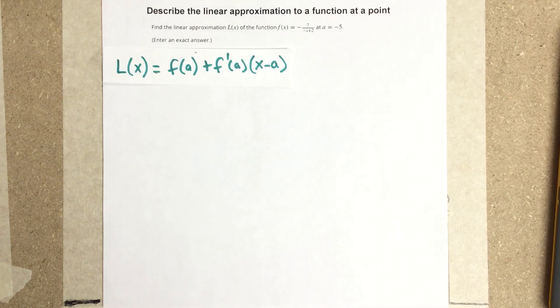In this video, we're going to describe the linear approximation to a function at a point. It says find the linear approximation L of X of the function F of X equals negative 7 over negative X plus 2 at A equals negative 5.